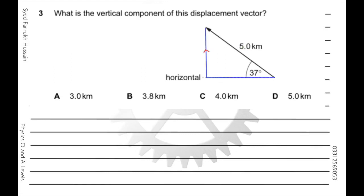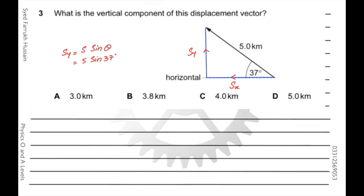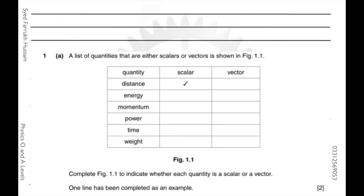In the next question, you have to find the vertical component of a displacement vector. Completing the triangle, these are the vectors to be added and this is the resultant. The horizontal displacement is Sx and the vertical displacement is Sy. Since we need the vertical component, Sy equals S sine theta, which gives 5 sine 37 degrees, resulting in 3 kilometers.